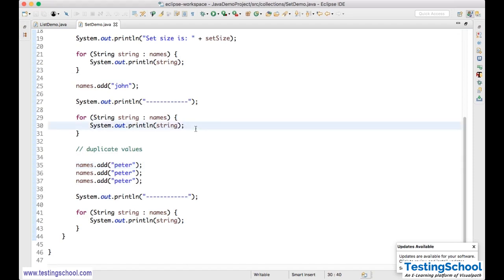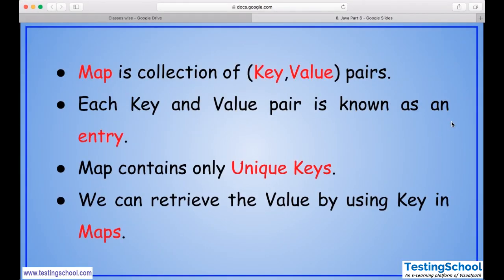Now we'll see Map. Map is a collection of key-value pairs. Each key-and-value pair is known as an entry. Map contains only unique keys, but we can have duplicate values. We retrieve a value by using its key — that is why the key must be unique. You can have duplicate values, but you cannot have duplicate keys.